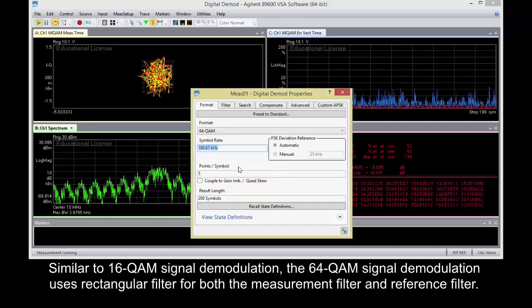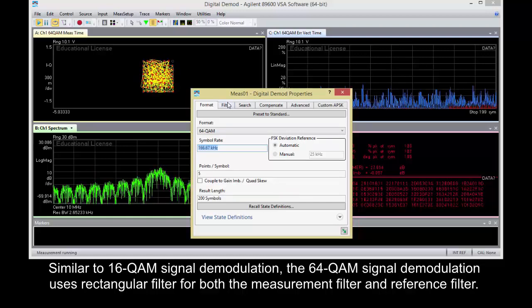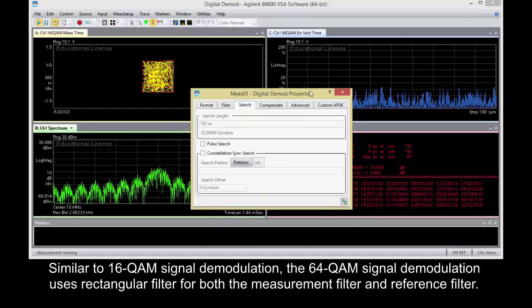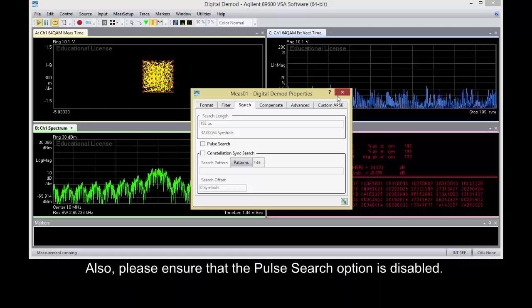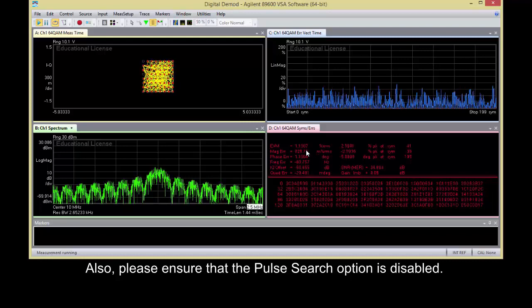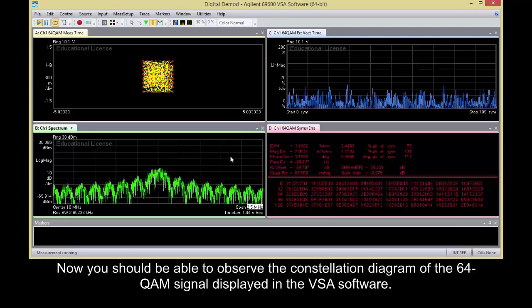Similar to 16QAM signal demodulation, the 64QAM signal demodulation uses rectangular filter for both the measurement filter and reference filter. Also, please ensure that the pulse search option is disabled. Now you should be able to observe the constellation diagram of the 64QAM signal displayed in the VSA software.